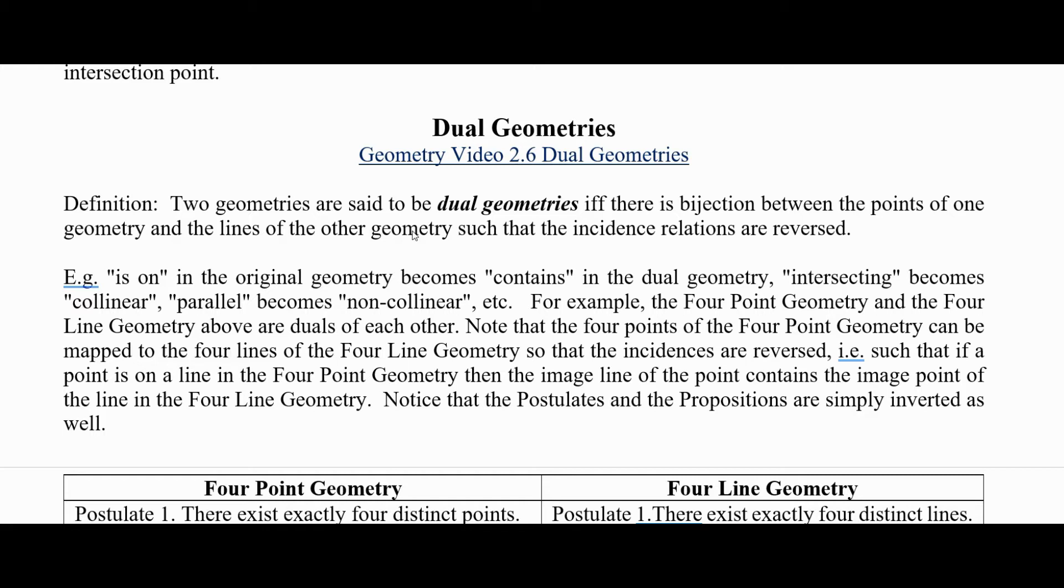In other words, such that if a point is on a line in the four-point geometry, then the image line of the point contains the image point of the line in the four-line geometry. Notice that the postulates and propositions are simply inverted as well.